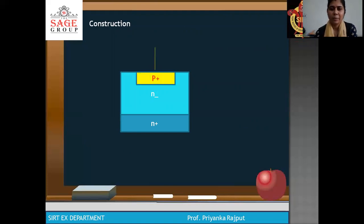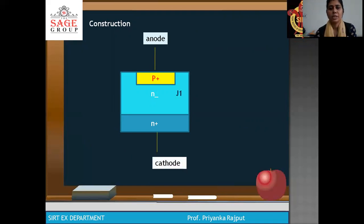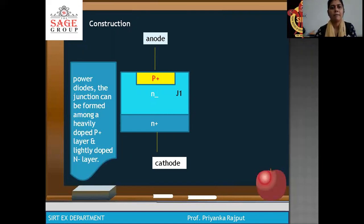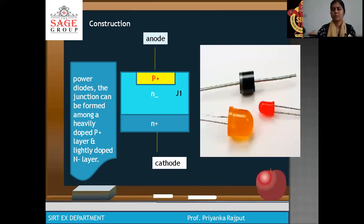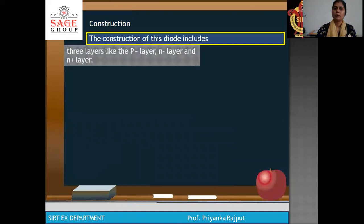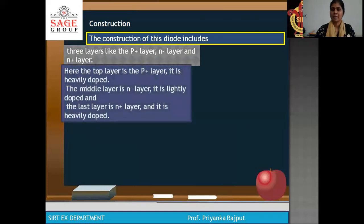The anode is connected with the P+ layer and the cathode is connected with the N+ layer. The junction J1 is formed between the P+ and N- layers. The junction is formed between the heavily doped P+ layer and the lightly doped N- layer. The construction includes three layers: P+, N- and N+. The top P+ layer is heavily doped, the middle N- layer is lightly doped, and the bottom N+ layer is heavily doped.